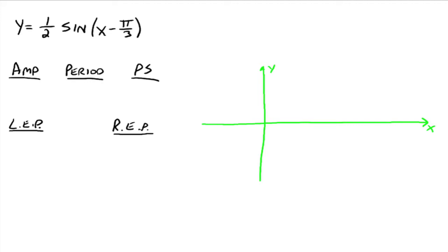So let's try one. The amplitude, the absolute value of one-half, so that would just be a half. The period would be 2 pi over b. b here is 1, so the period would be 2 pi. And the phase shift would be pi over 3 is your c, and your b is 1. So pi over 3 over 1 would just be pi over 3. Now this LEP and REP, this is what I'm calling the left endpoint and the right endpoint.